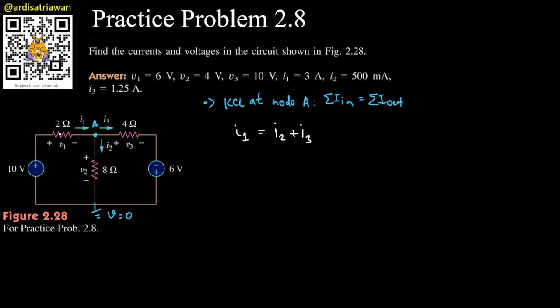But i1 can be calculated by using the difference of voltage between this node here, which is 10 volts from the ground, with this node here. So we will have (10 - Va) divided by the resistance between them, which is 2.